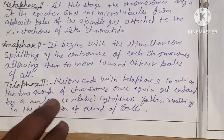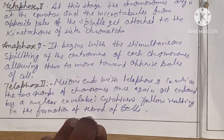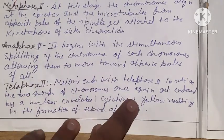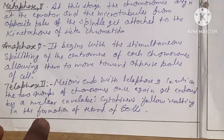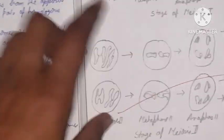Meiosis ends with telophase II, in which two groups of chromosomes become enclosed by the nuclear envelope. Cytokinesis follows, resulting in the formation of four cells. The stages are prophase I, metaphase I, anaphase I, telophase I, prophase II, metaphase II, anaphase II, and telophase II.